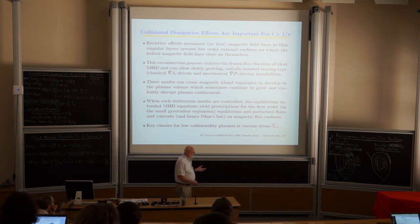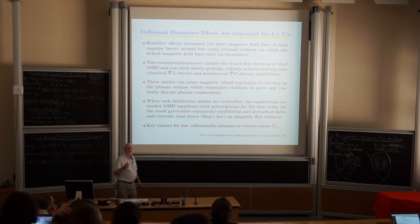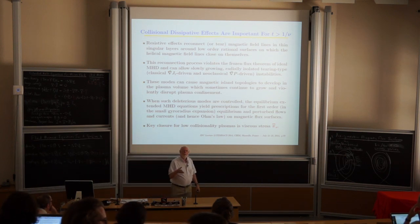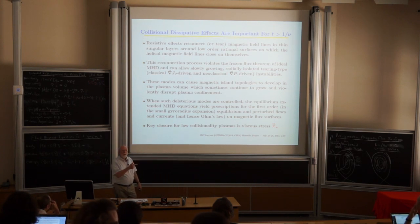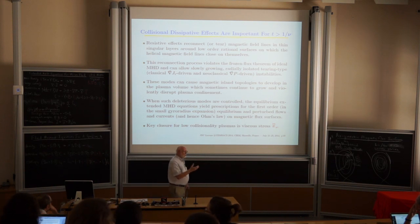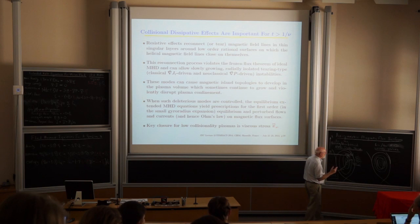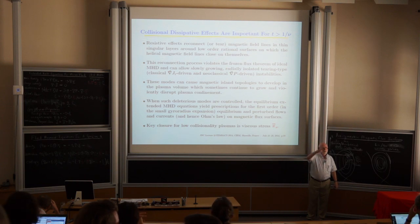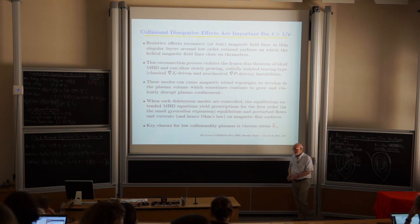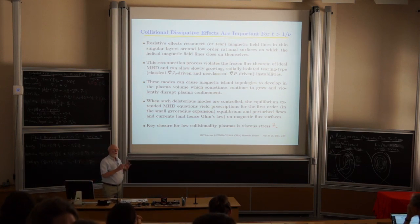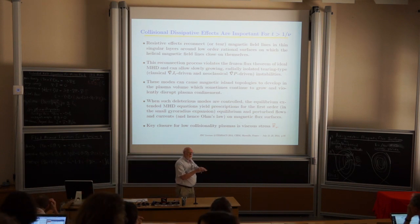What does resistivity allow? Resistivity allows you to tear the magnetic field lines on rational surfaces. Remember dB/dt = curl(V cross B). Working that out, it's the parallel derivative of the flow. But the parallel derivative vanishes on a rational surface.